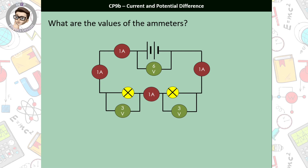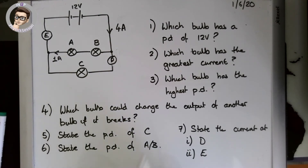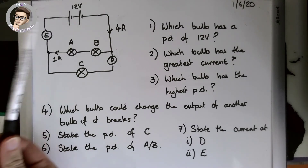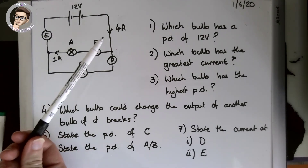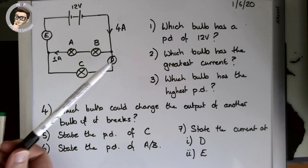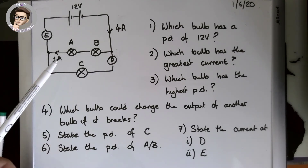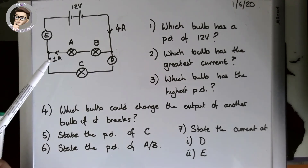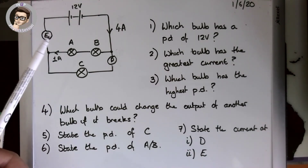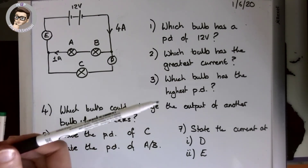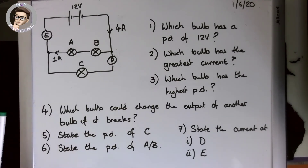Time for some questions. We've got a circuit with 12 volts and 4 amperes of current flowing out into a junction. There's an unknown ammeter D on the branch with bulb C, and the branch with bulbs A and B has 1 amp coming back into the junction going into unknown ammeter E. Seven questions — pause the YouTube here, draw the circuit and write the questions, then come back when you're ready.